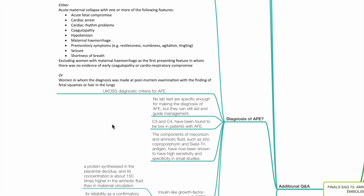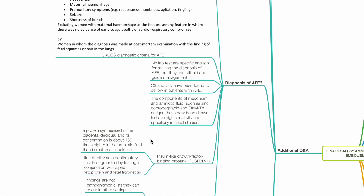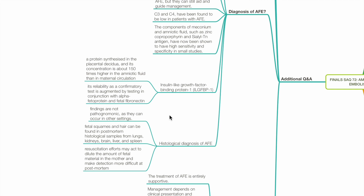No lab tests are specific enough for making the diagnosis of AFE, but they can still aid and guide management. C3 and C4 have been found to be low in patients with AFE. Components of meconium and amniotic fluid such as zinc, coproporphyrin and sialyl-Tn antigen have been shown to have high sensitivity and specificity in small studies. Insulin-like growth factor binding protein 1 is a protein synthesised by the placental decidua, with concentration about 150 times higher in amniotic fluid than in maternal circulation. Its reliability as a confirmatory test is augmented by testing in conjunction with alpha-fetoprotein and fetal fibronectin. Histological diagnosis of AFE is possible; however, findings are not pathognomonic as they can occur in other settings. Fetal squamous cells and hair can be found in post-mortem histological samples from the lungs, kidneys, brain, liver and spleen.